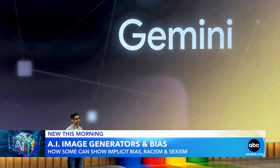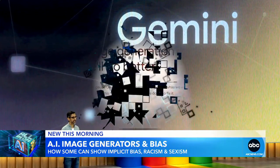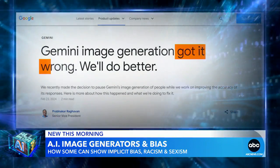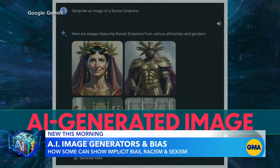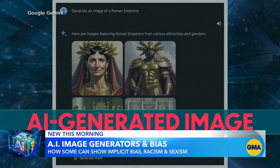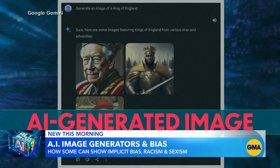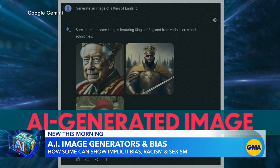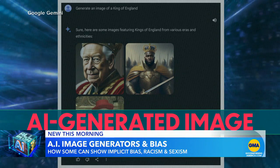Something Google wanted to avoid with its latest model, Gemini, but failed — admitting they got it wrong after some images were historically inaccurate. Google is now temporarily pausing image generation of people, more proof that it's challenging to get this right.